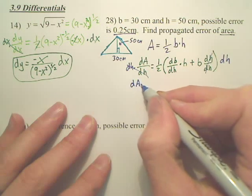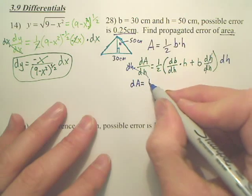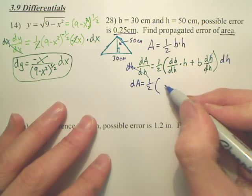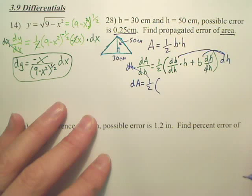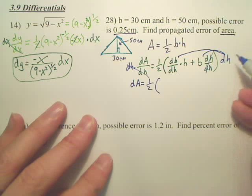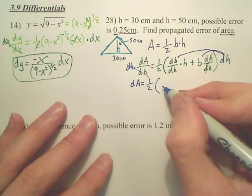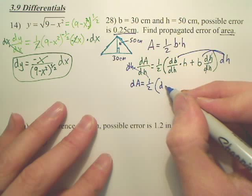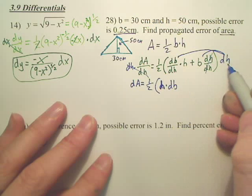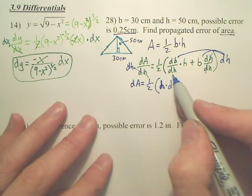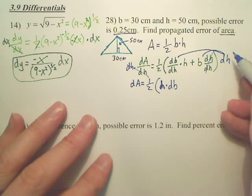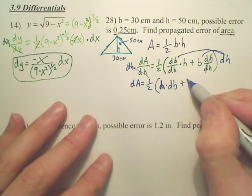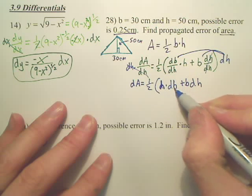So I now have dA is equal to one half. Now, would I distribute this? Is that okay? Now, when I distribute here, don't the dH's cancel, leaving me just dB? That's right. Can I put the H first? H times dB. Are you guys okay with that? This dH comes in here, and it's going to cancel with this dH. And this comes in here.